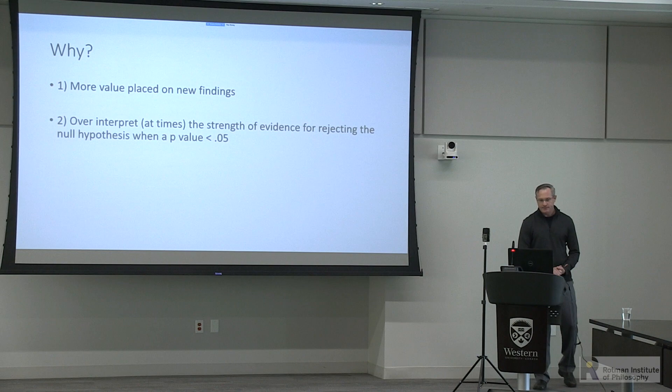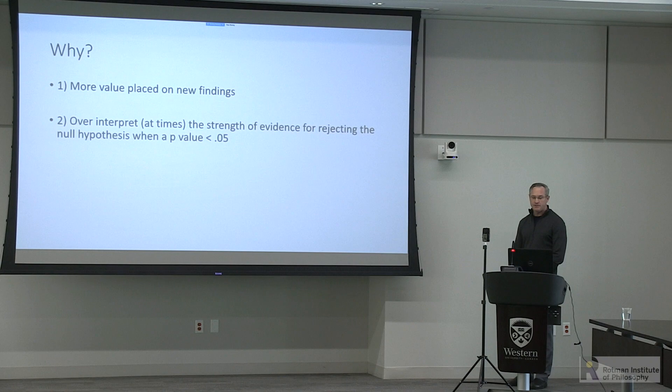We over-interpret the strength of evidence for rejecting the null hypothesis when a p-value is less than 0.05. In our field we've typically adopted p < 0.05 as the threshold, and when we get that, it's like 'good, we have something significant, let's move on.' But as simulations have shown, our actual alpha level often isn't 0.05 — it can be inflated quite a bit, particularly when conducting many statistical tests or using the p-value to determine what to look at.